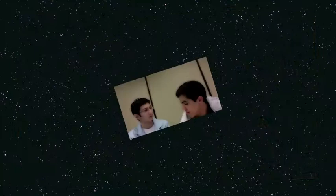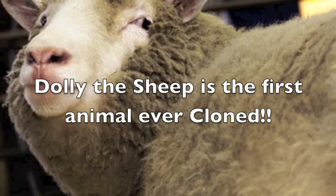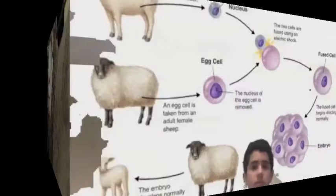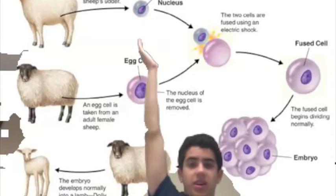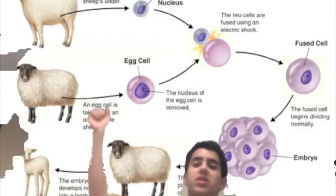Now, Mr. Hirschkowitz, I want you to explain to me what I just said. The following video is a presentation of reproductive cloning using the technique called somatic cell nuclear transfer. The white lamb in the corner donates a cell, and the black sheep over here also donates an egg cell. However, we extract the nucleus from the egg cell and replace it with the nucleus of the donor cell. The reason why we do this is so that the DNA will match the DNA of the white lamb.